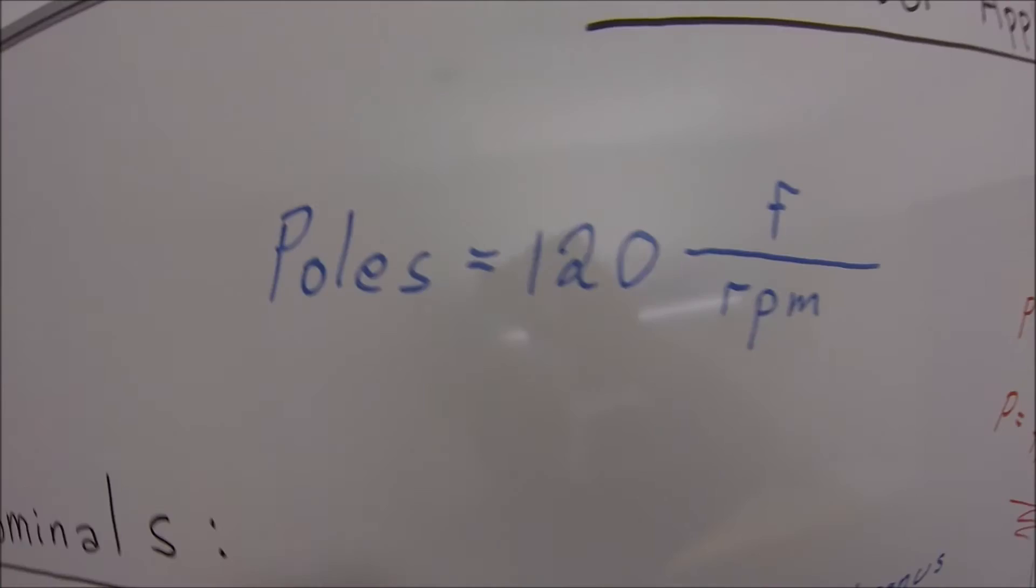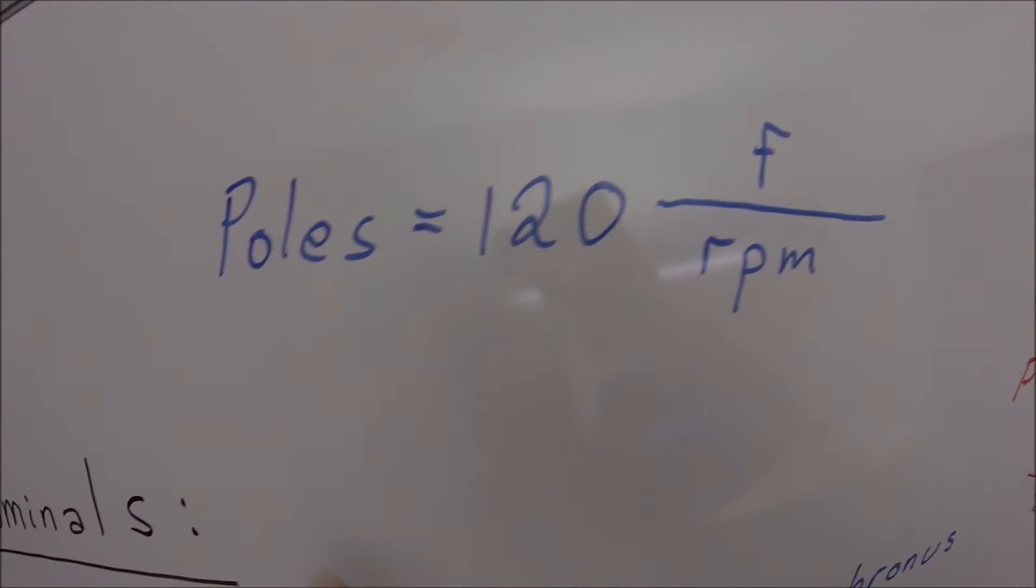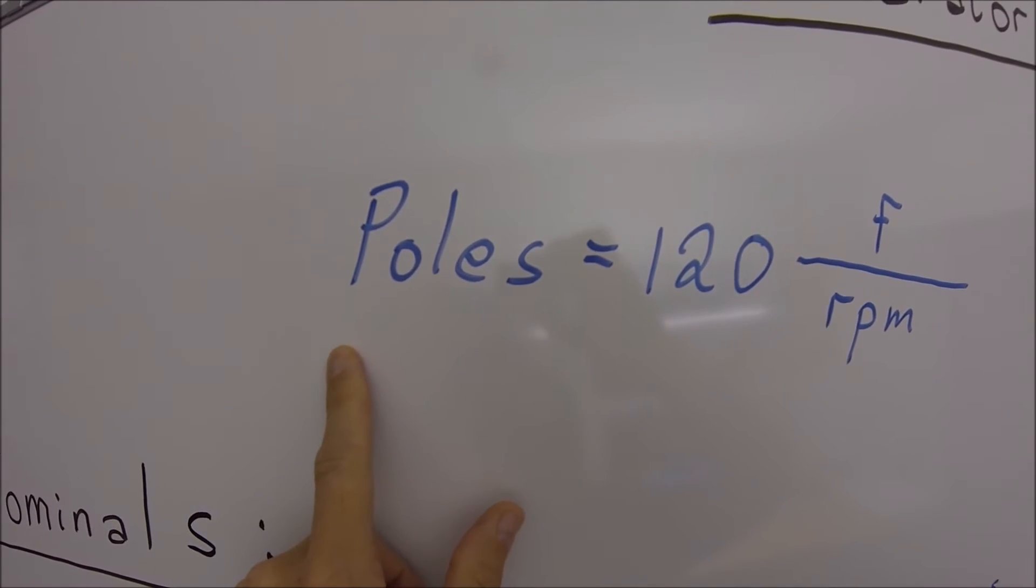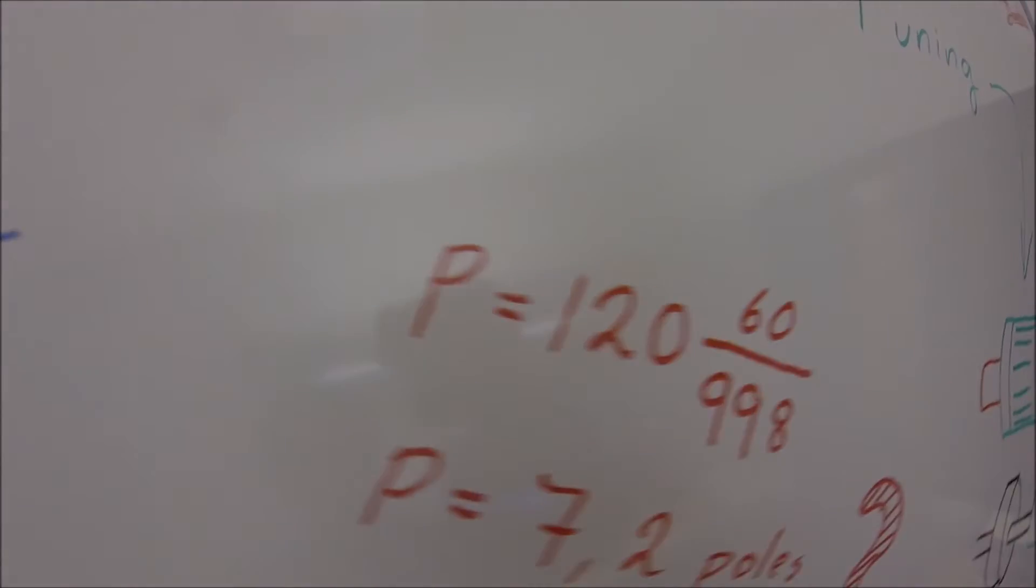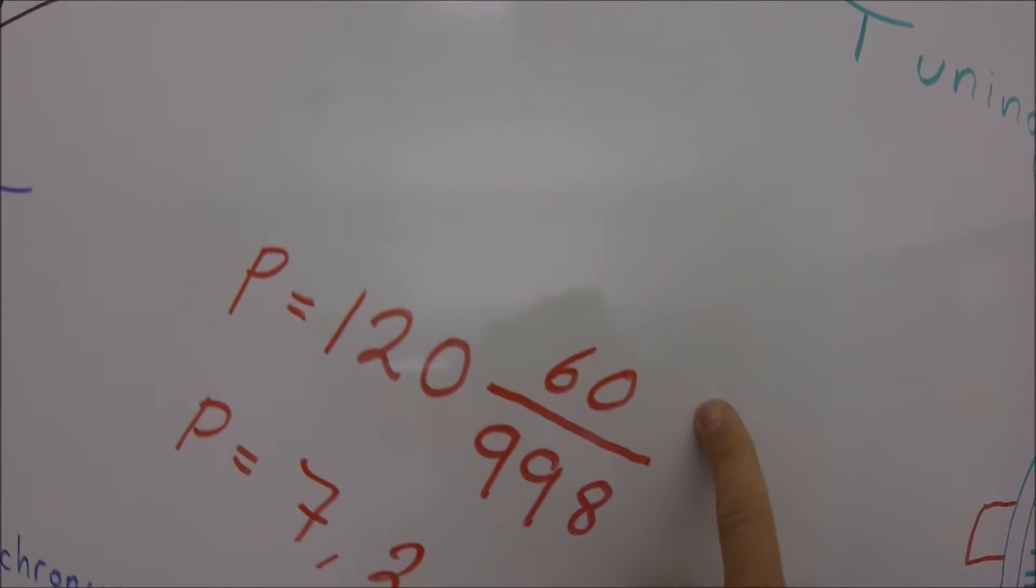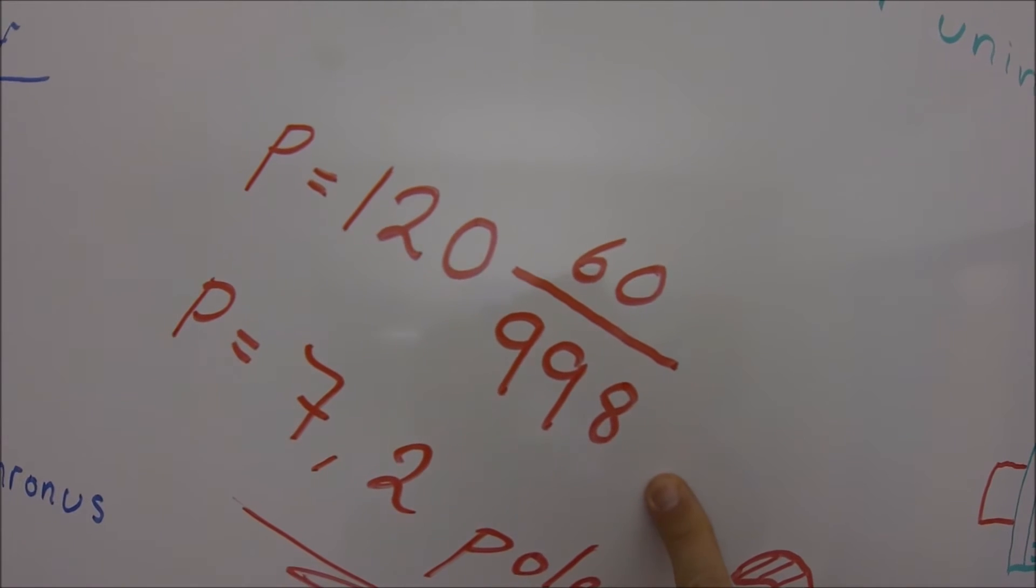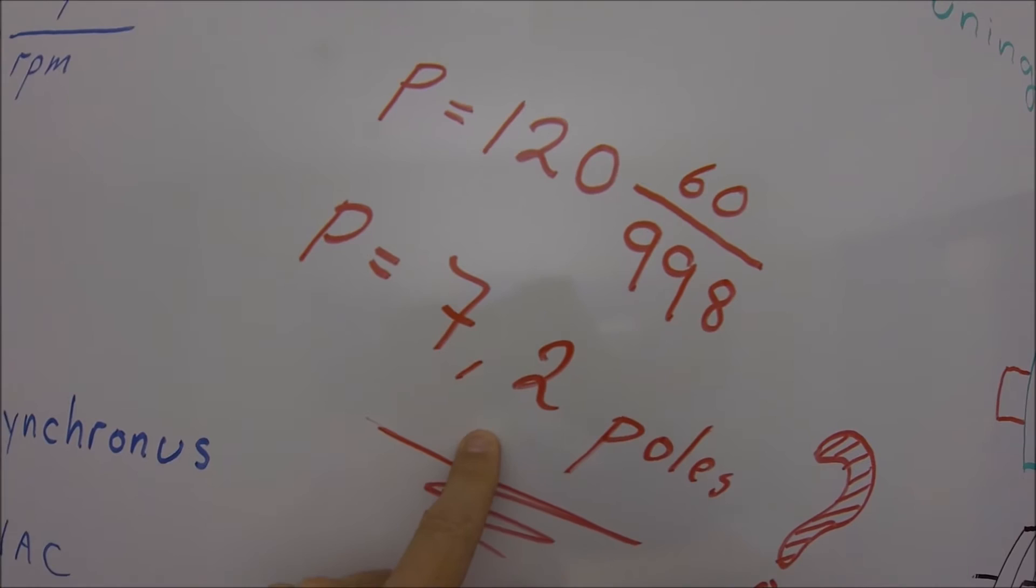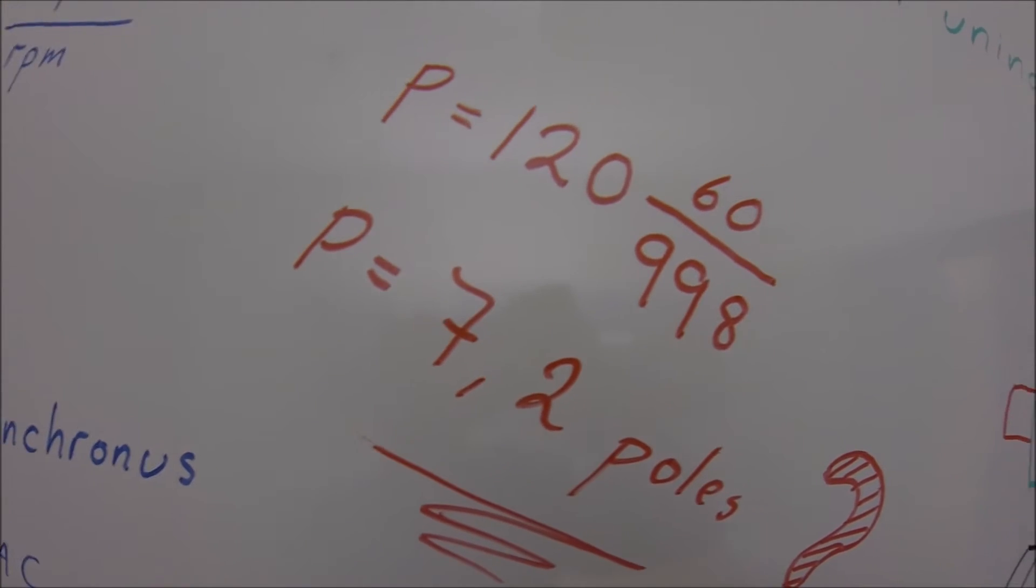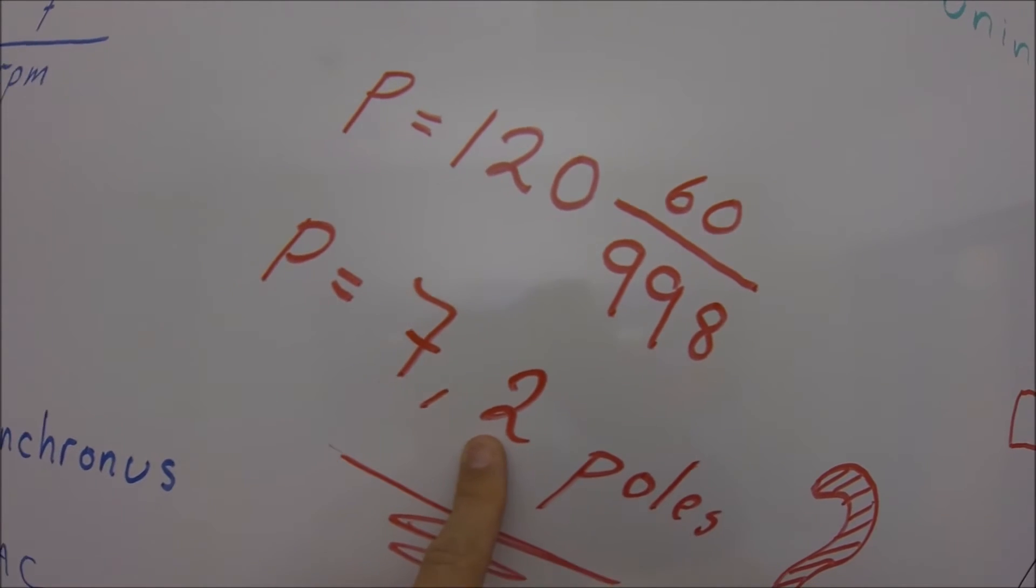The relation between the frequency and RPM will give the pole number. If I put these numbers into the equation, something strange: 60 hertz, 998 rpm, 7.2 poles cannot be right. It should be some number without decimals.